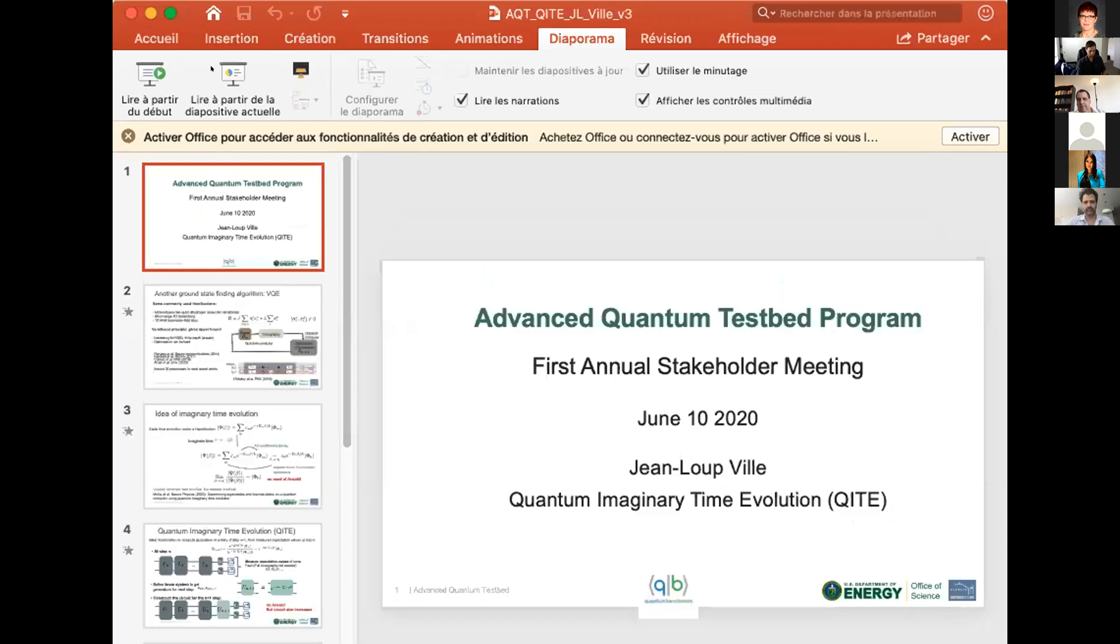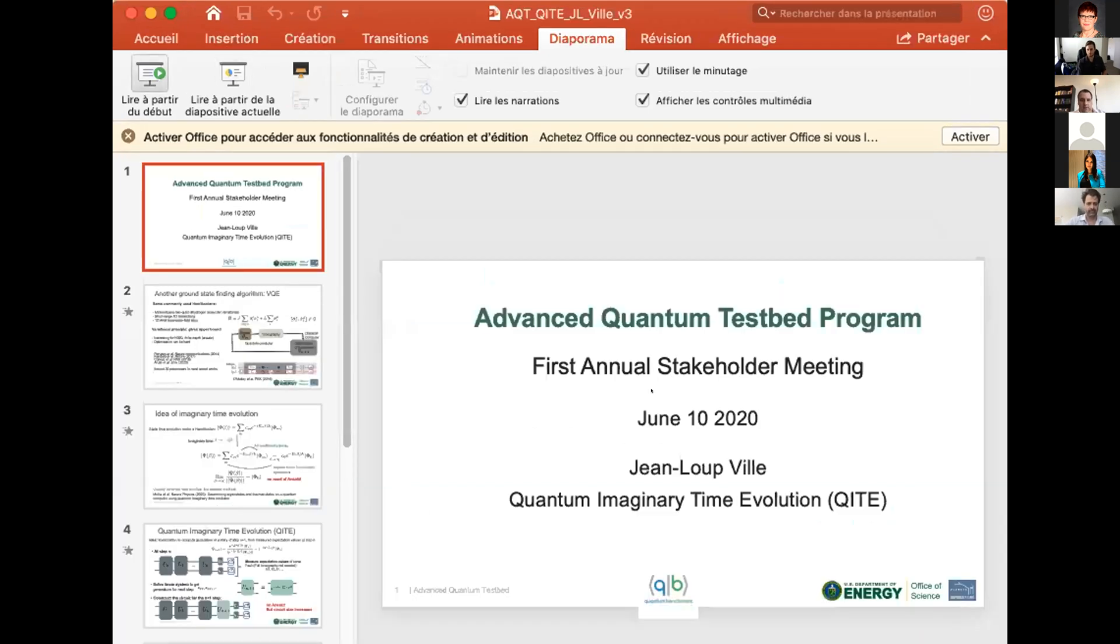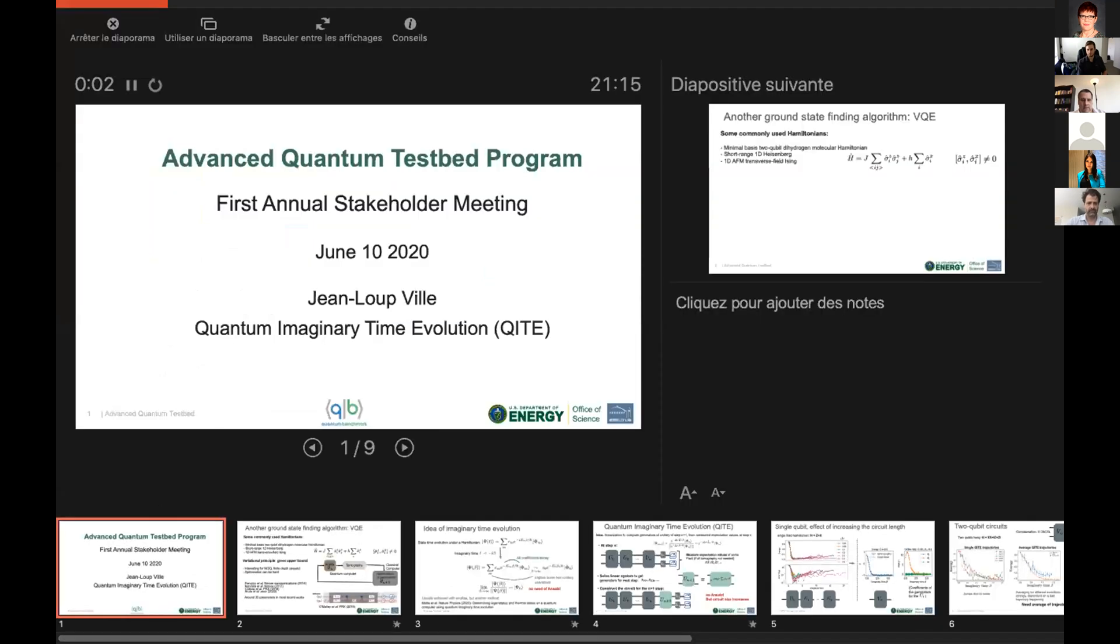And now we'll have a talk on the quantum imaginary time estimation algorithm that was developed by Garnet Chan at Caltech, and the talk will be given by one of our postdocs, Dr. Jinlu Q.